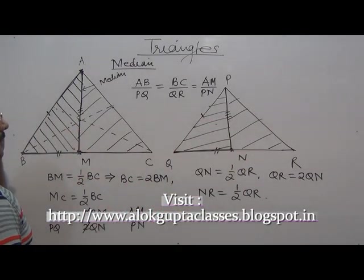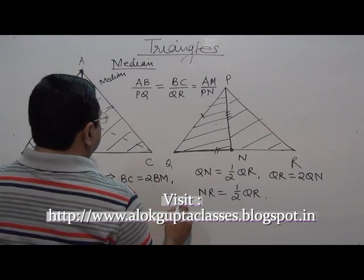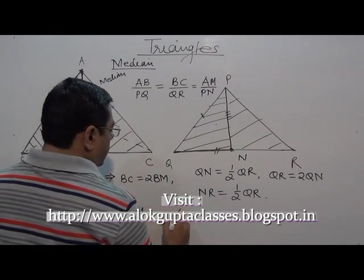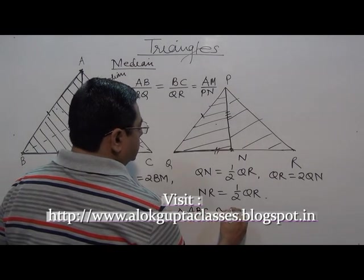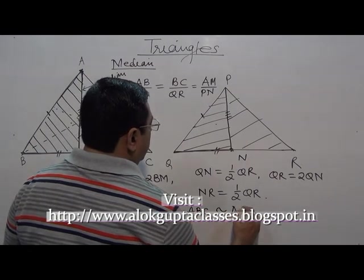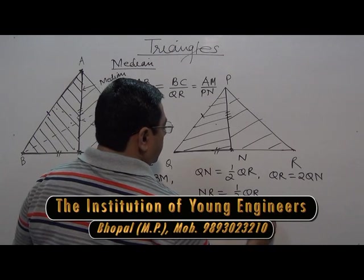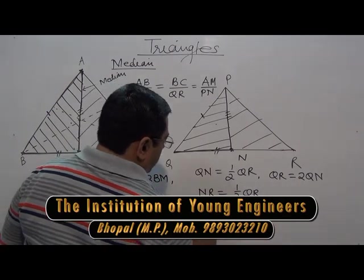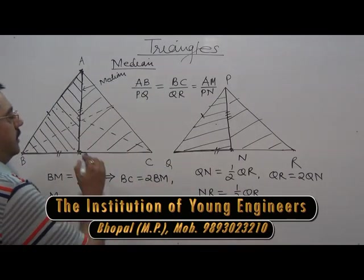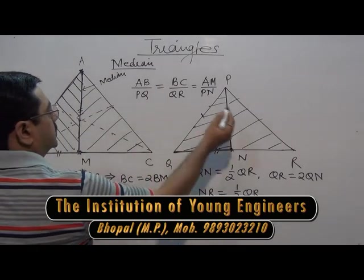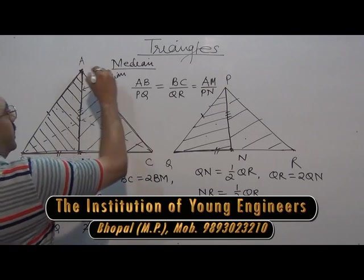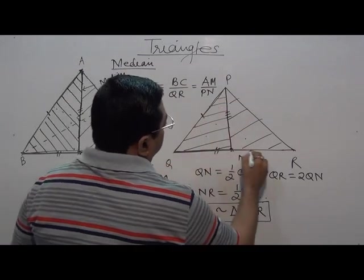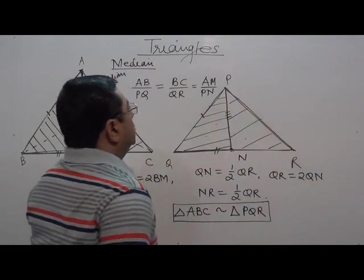Means triangle ABC is similar to triangle PQR. This portion is similar to this, this portion is similar to this. This means this total area is similar to this total area.